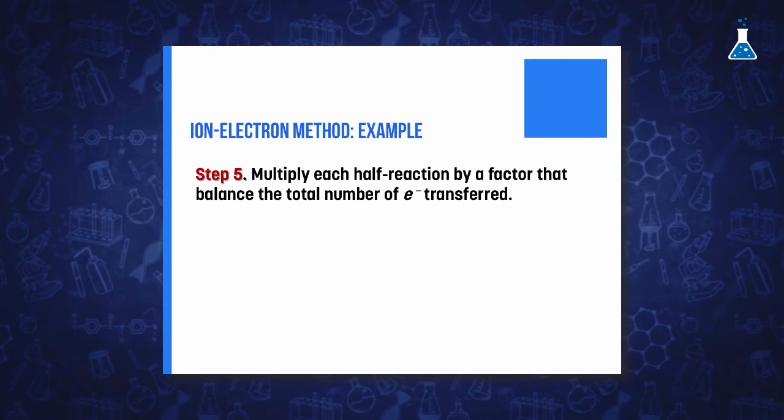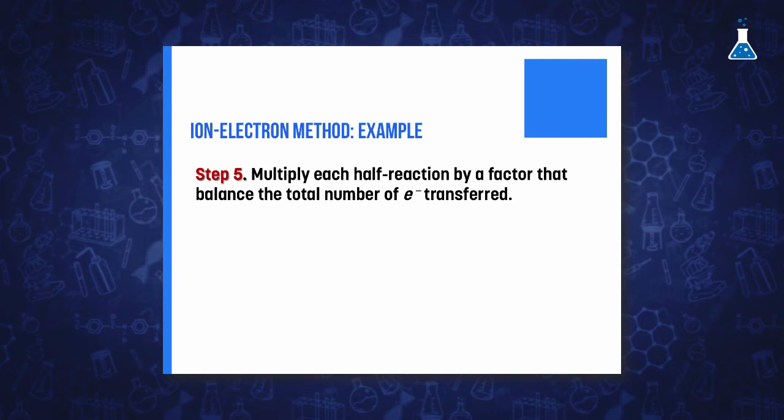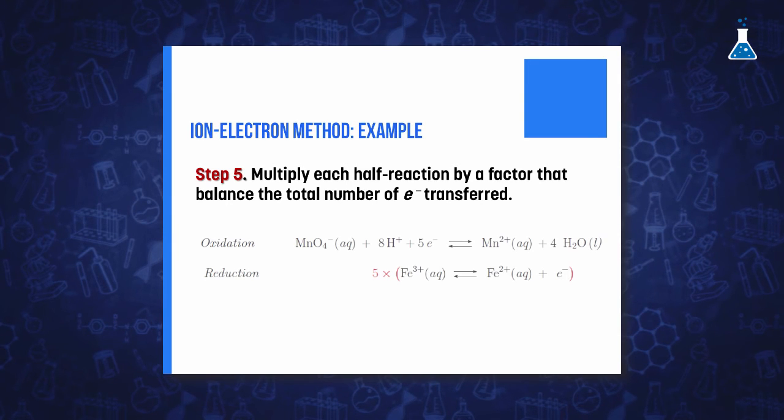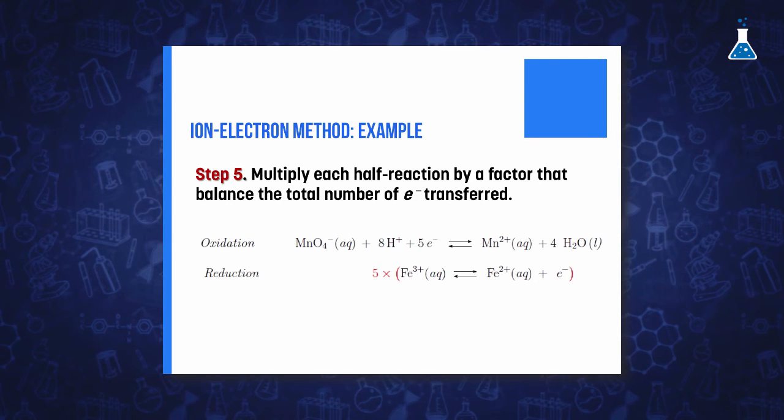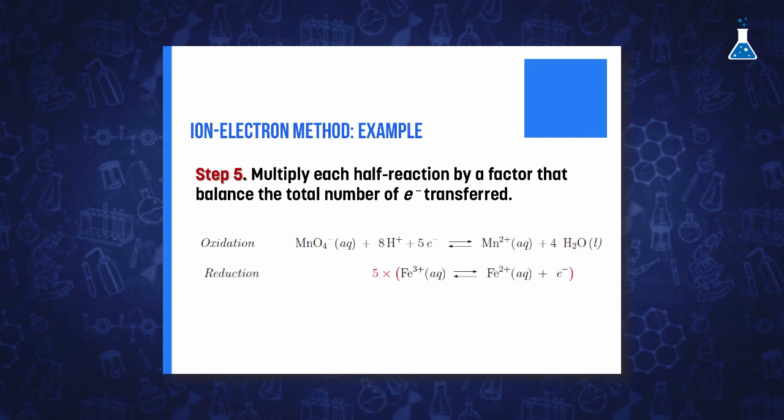The next steps will be to balance electrons gained with electrons lost, since both terms must be the same. Therefore, we multiply each equation by appropriate coefficients. In our case, we should multiply the second half-reaction by a factor of 5.